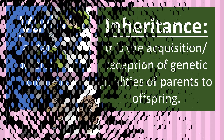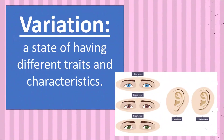Genetic variation refers to the differences between individuals or to the differences between populations. It is a state of having different traits and characteristics. For example, some people have blue eyes, some are brown, while others have green eyes. It is due to the presence of differences in sequences of genes between individual organisms of a species.